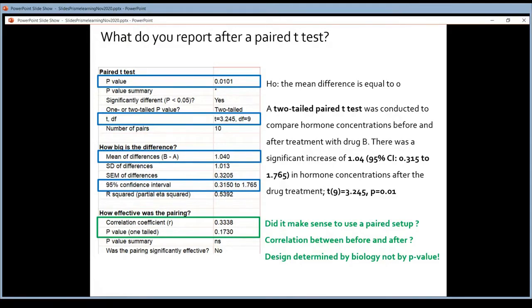There's one thing I want to mention here. Under the outcome, under the t-test and the biological effect you have this part: How effective was the pairing? And you get a p-value there also and a correlation coefficient. So what does this p-value tell you?